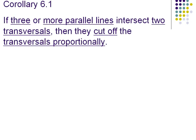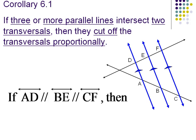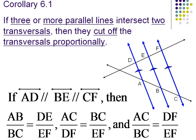There's a corollary to go with these theorems. If three or more parallel lines intersect two transversals, then they cut off the transversals proportionally. Here's a picture of that. So we're saying if those three blue lines are parallel, then all these ratios are true. The ratio of each segment on each side of the transversal is proportional to the corresponding sides.